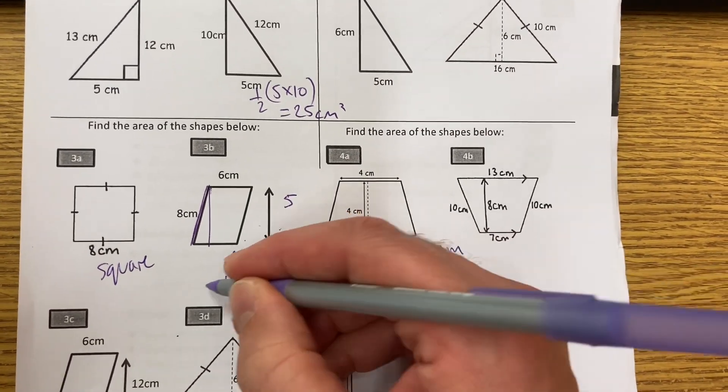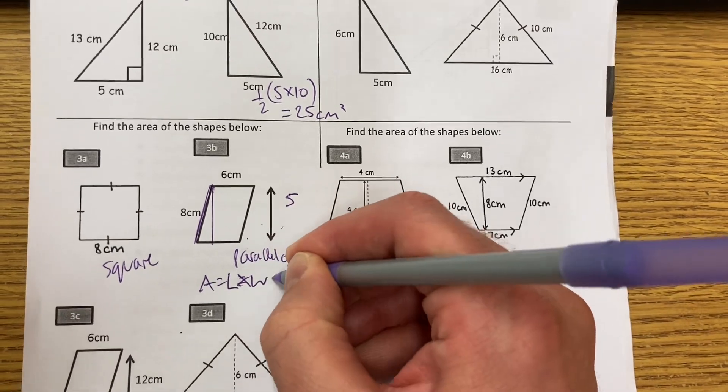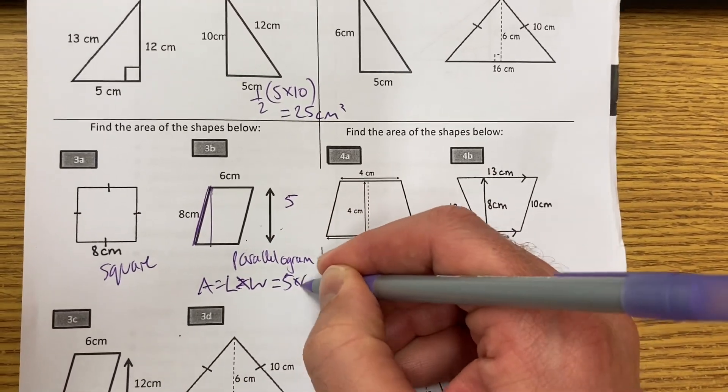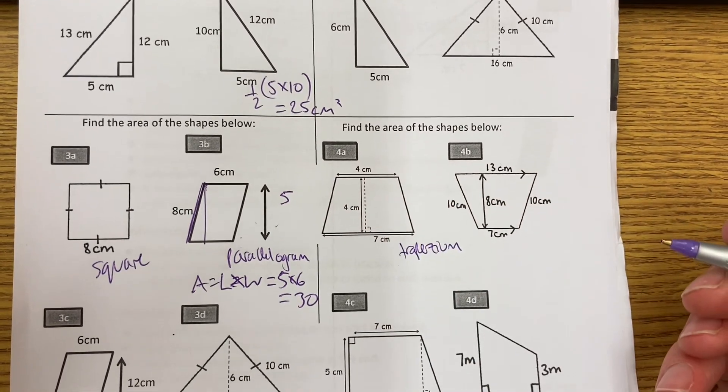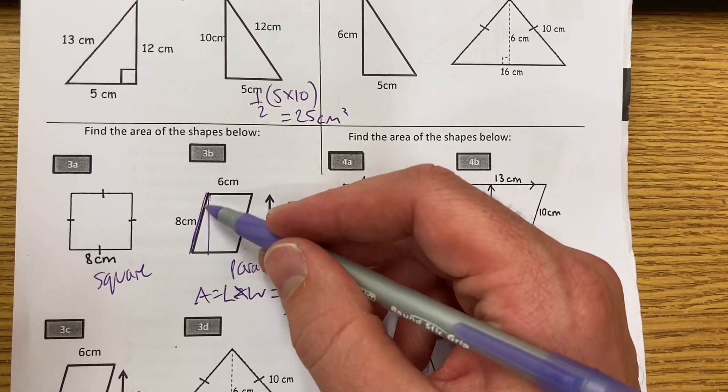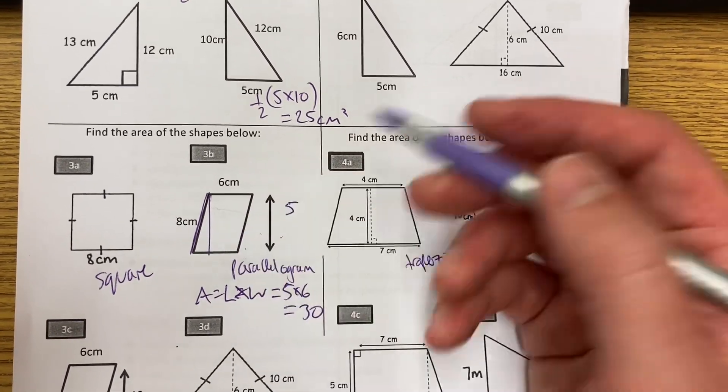Then it would be the area is length times the width. 5 times 6 is 30. OK? Because that slope doesn't actually give us anything to help with the area. It does with the perimeter, but not with the area.